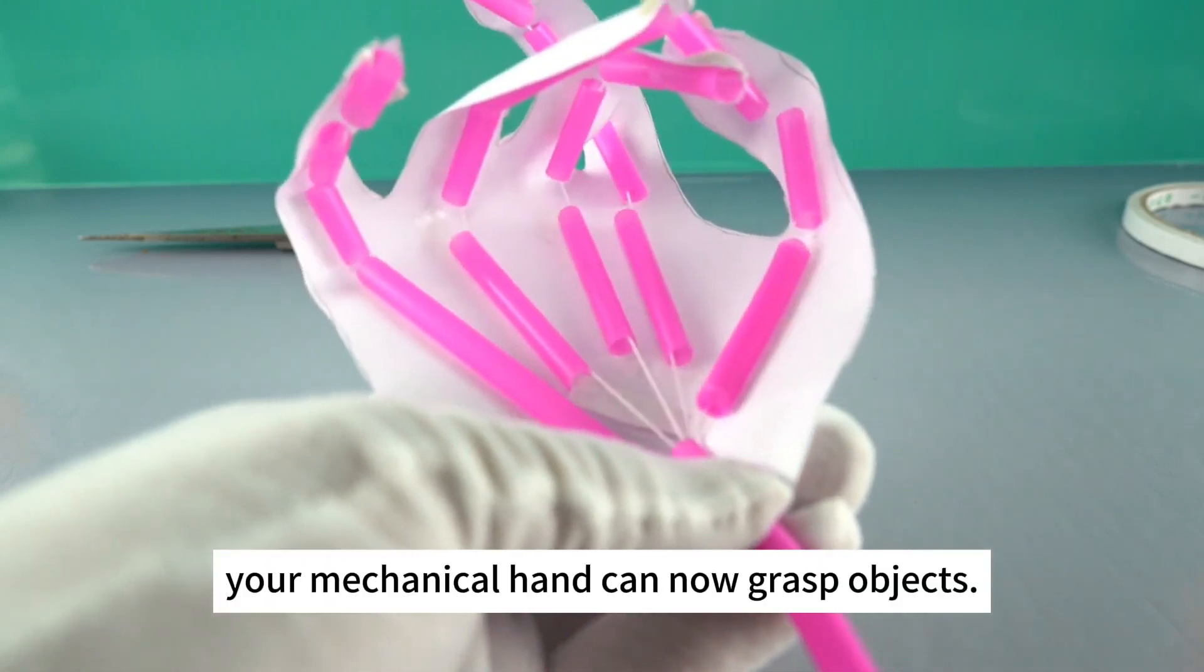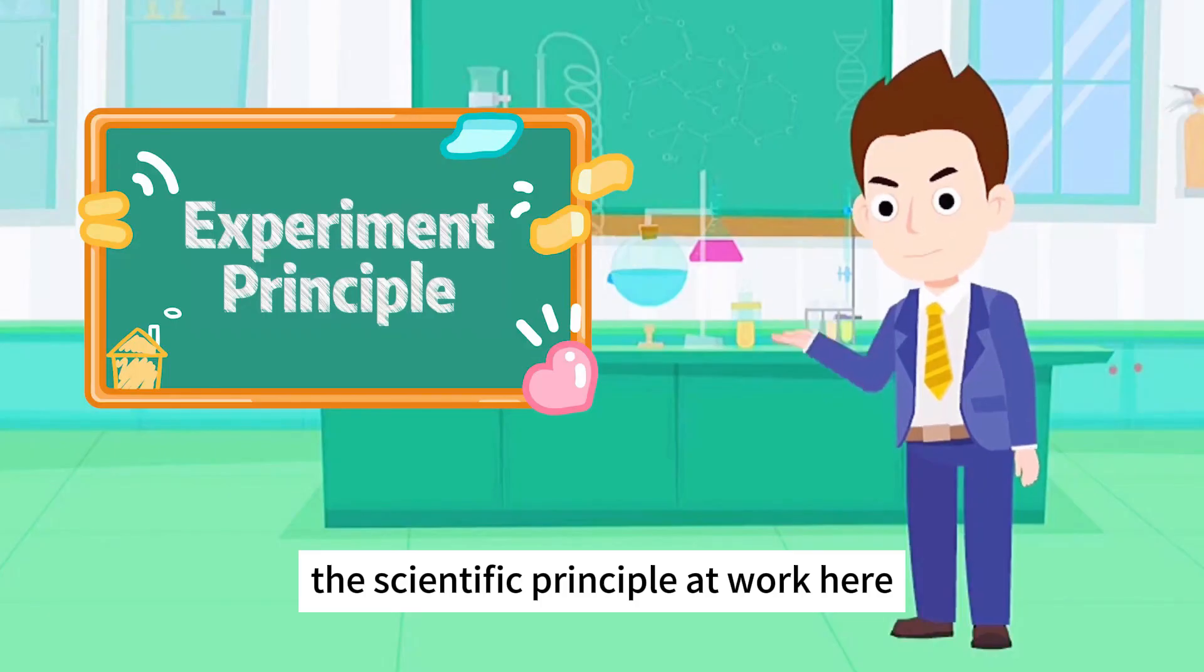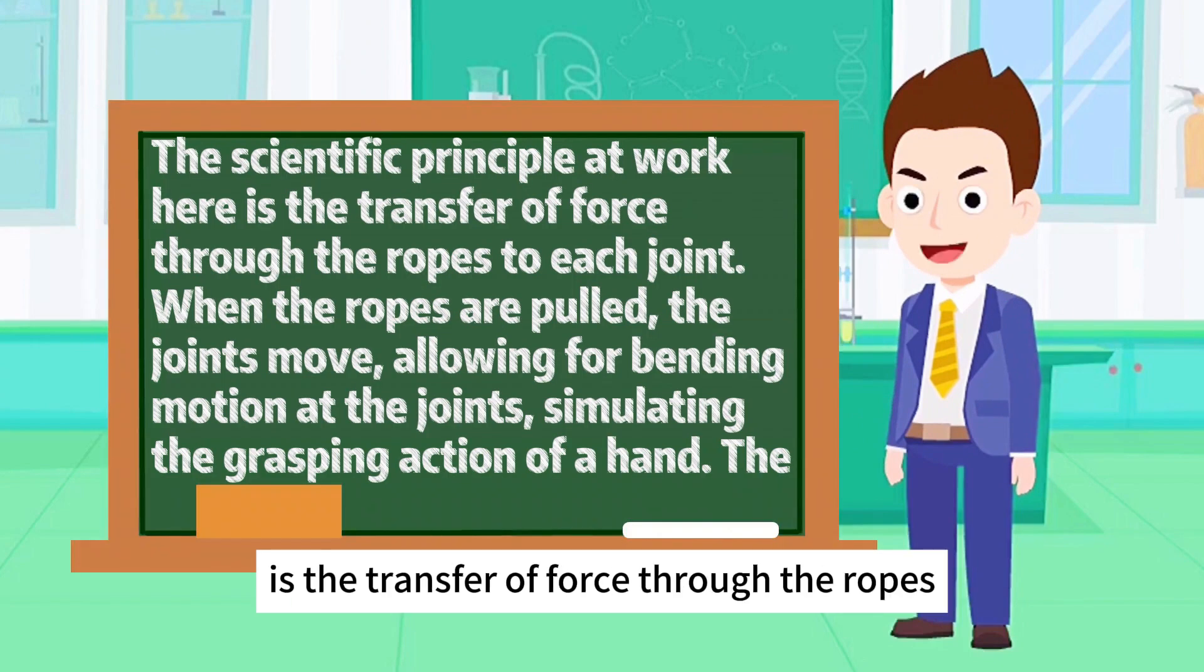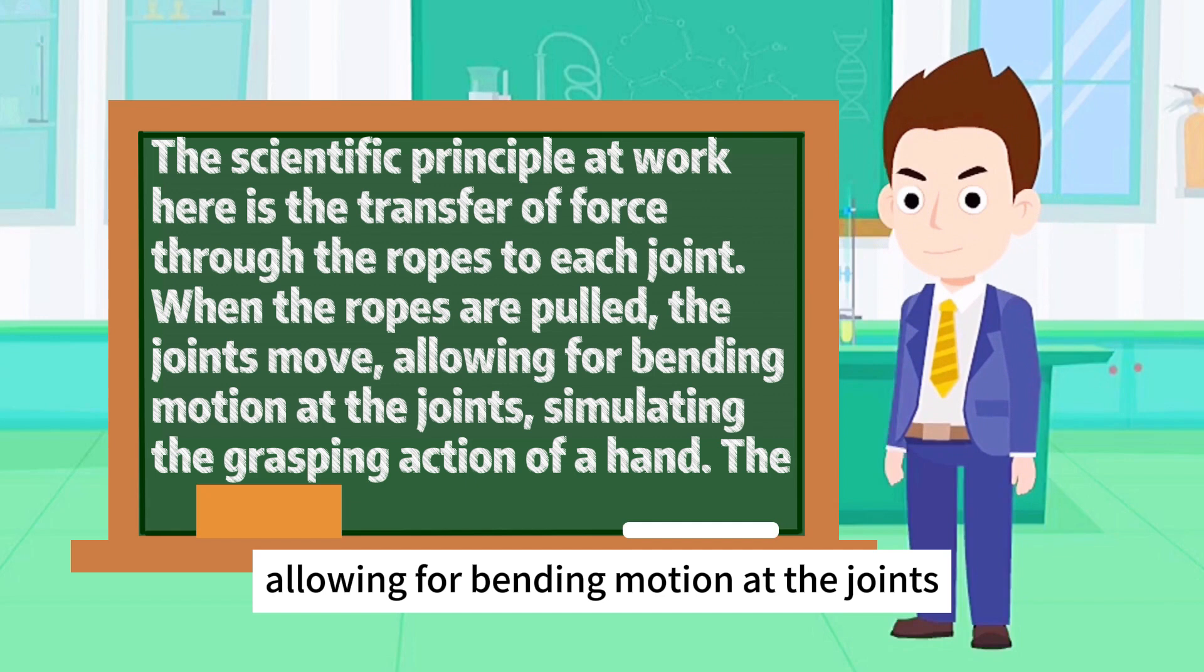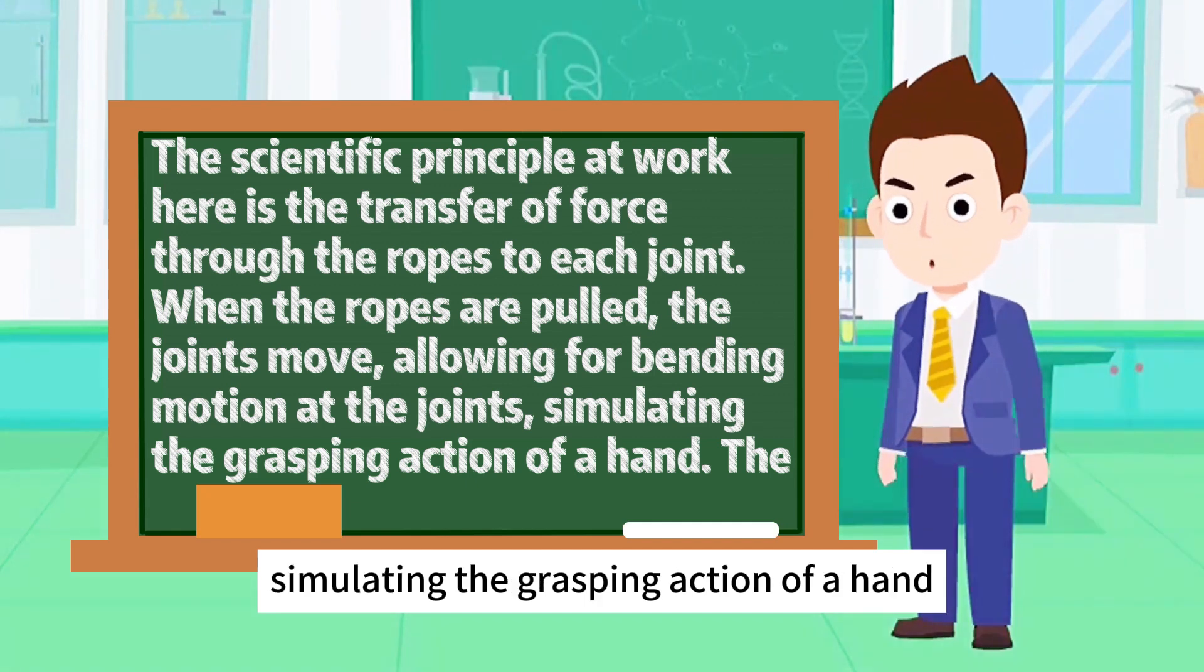By pulling the ropes, your mechanical hand can now grasp objects. The scientific principle at work here is the transfer of force through the ropes to each joint. When the ropes are pulled, the joints move, allowing for bending motion at the joints, simulating the grasping action of a hand.